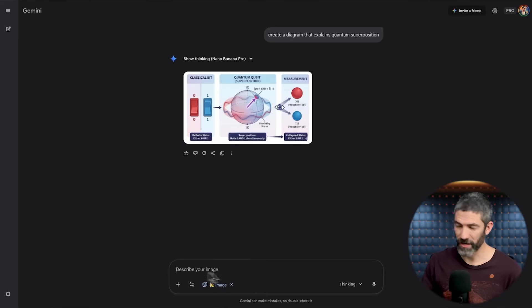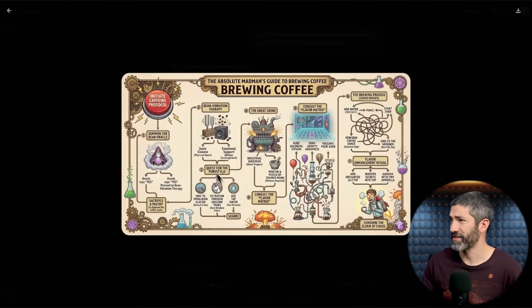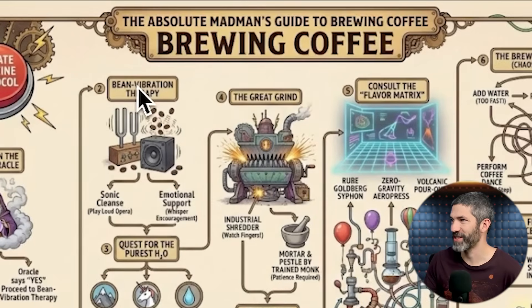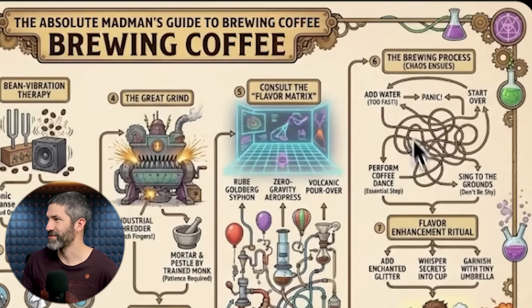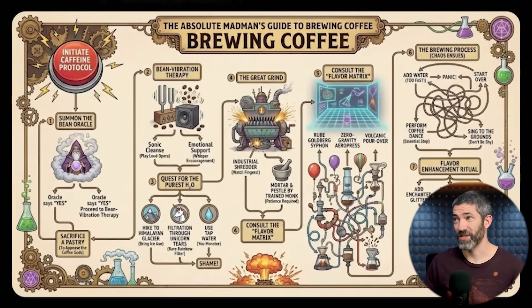Here's another one I saw going around: a flowchart for how to brew coffee — make it as wacky and over the top and complicated as possible. I just love the design of this. It's called 'The Absolute Madman's Guide to Brewing Coffee.' It starts with initiating the protocol, summoning the bean oracle, sacrificing a pastry to appease the coffee gods, and Bean Vibration Therapy. The quest for the purest H2O includes 'Filtration Through Unicorn Tears' or 'Use Tap Water, You Monster.' Then chaos ensues in the brewing process, followed by Performing the Coffee Dance — an essential step — or 'Sing to the Grounds, Don't Be Shy.' Finally: consume the Elixir of Chaos. Not just the overall aesthetic design with perfect text everywhere, but also pretty clever and funny throughout. That is just unbelievable.